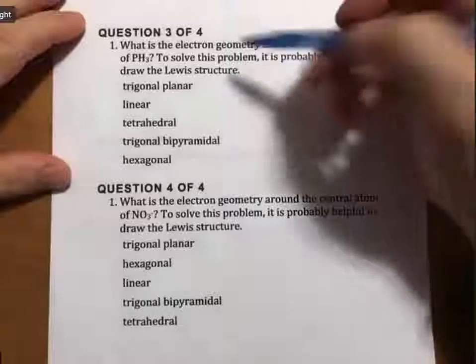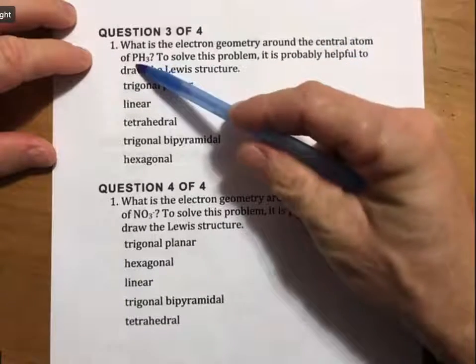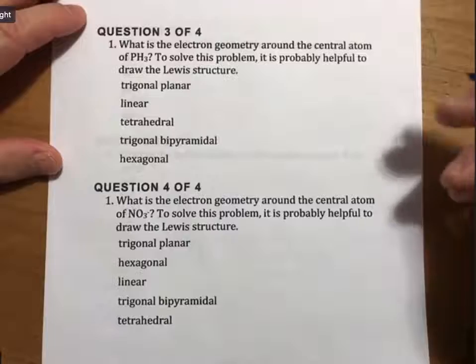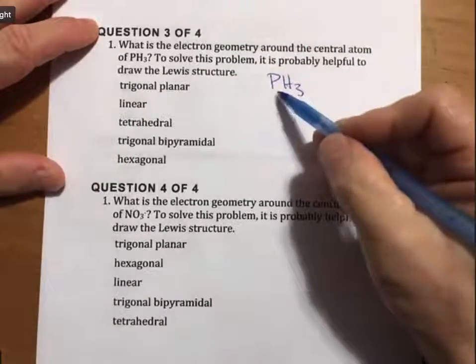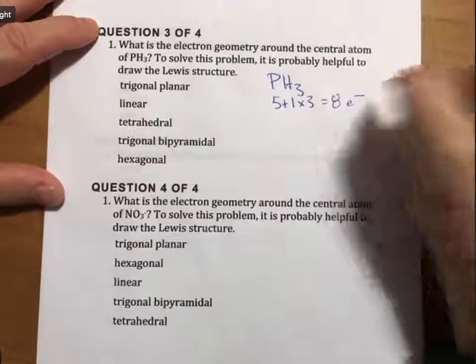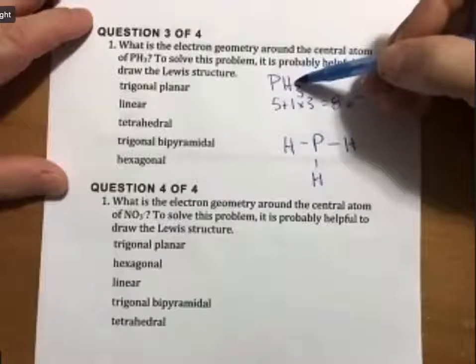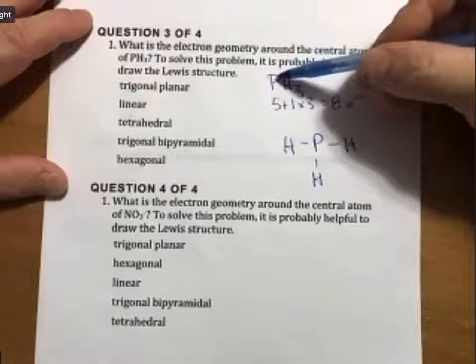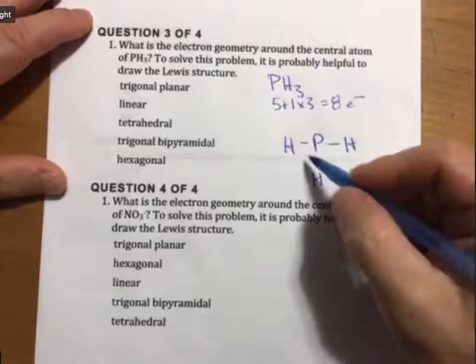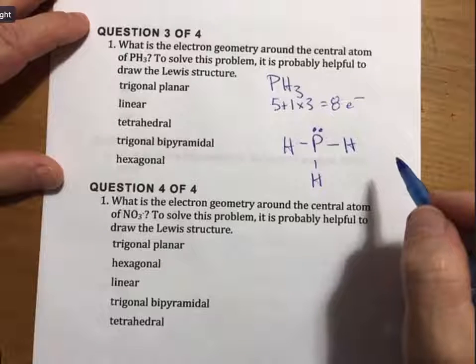The first question asks what is the electron geometry around the central atom of PH3. It says as a hint, it's probably helpful to draw the Lewis structure. Let's do that. For PH3, we have 5 plus 1 times 3 equals 8 electrons. When we put these in, we realize hydrogen cannot be the central atom, so it must be phosphorus. We put phosphorus in, attach the hydrogens with single bonds, then we have two more electrons which we place on the central atom.